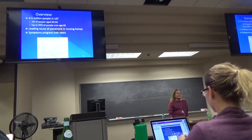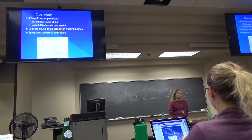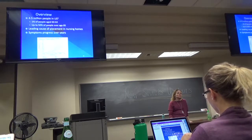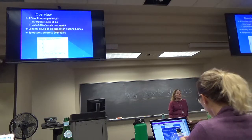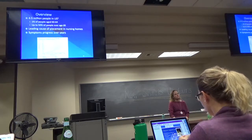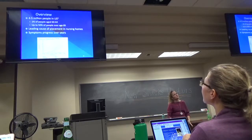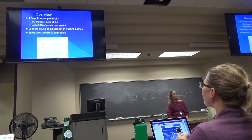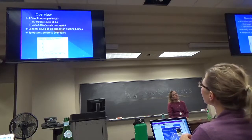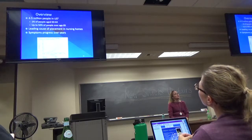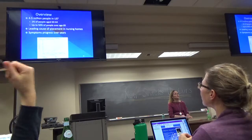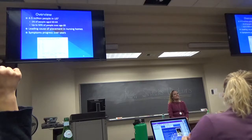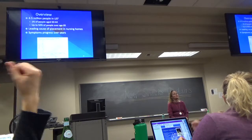Dementia is the leading cause of placement in nursing homes, and the symptoms do progress as patients get older. This graph shows Alzheimer's disease prevalence in different industrialized countries, and you can see that from the 40s to the 90s, there's a really significant increase in prevalence.